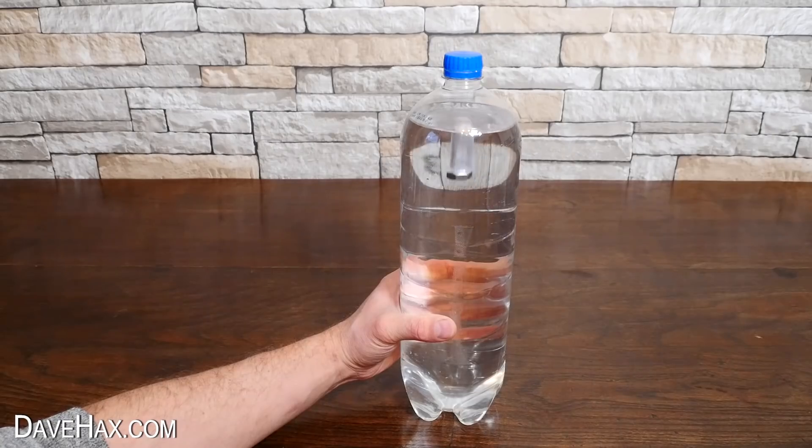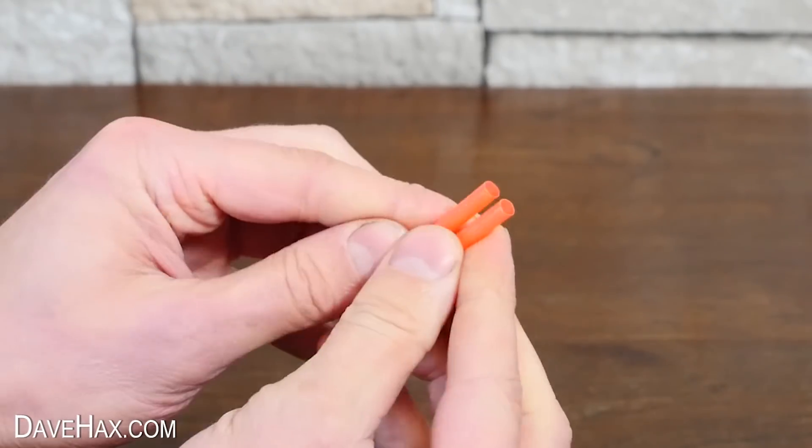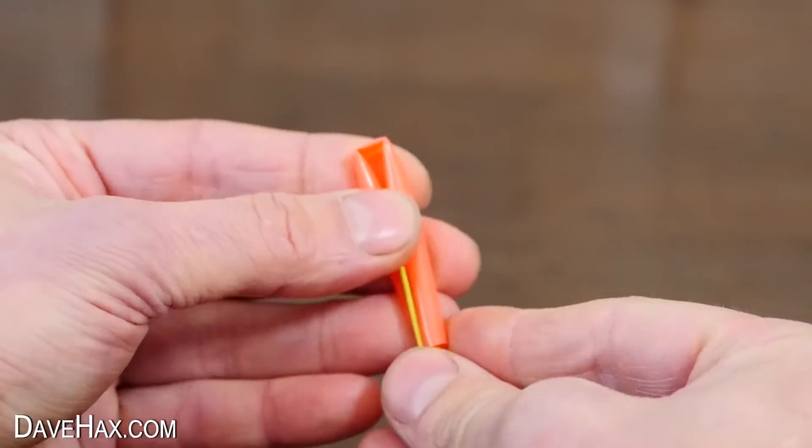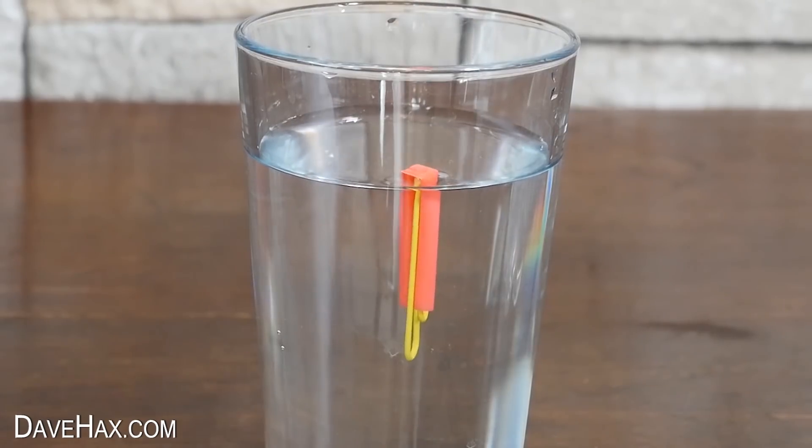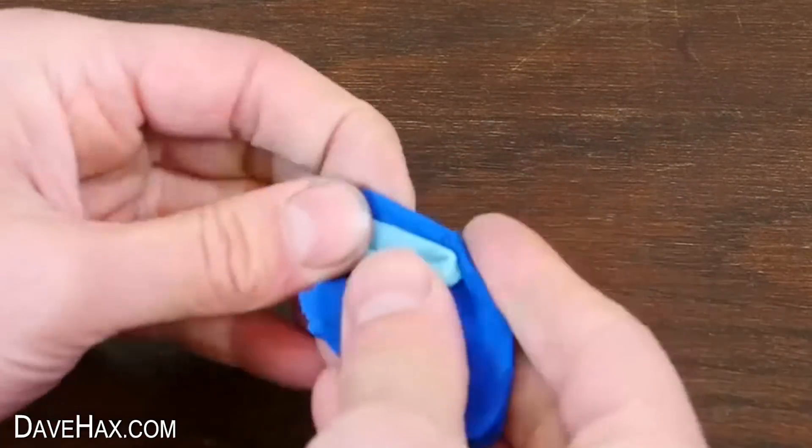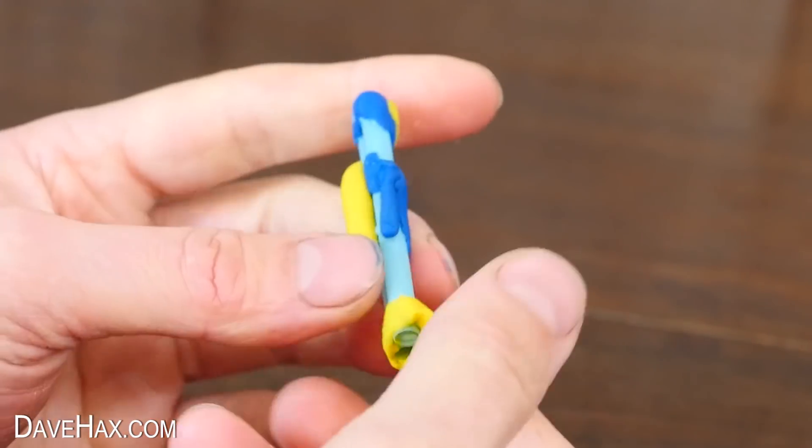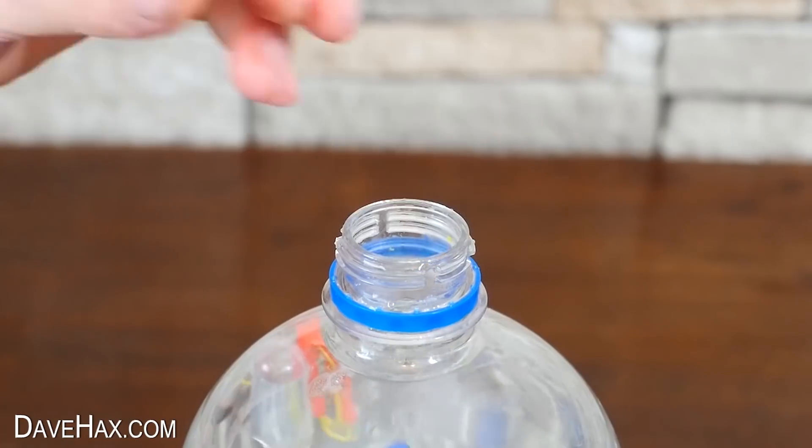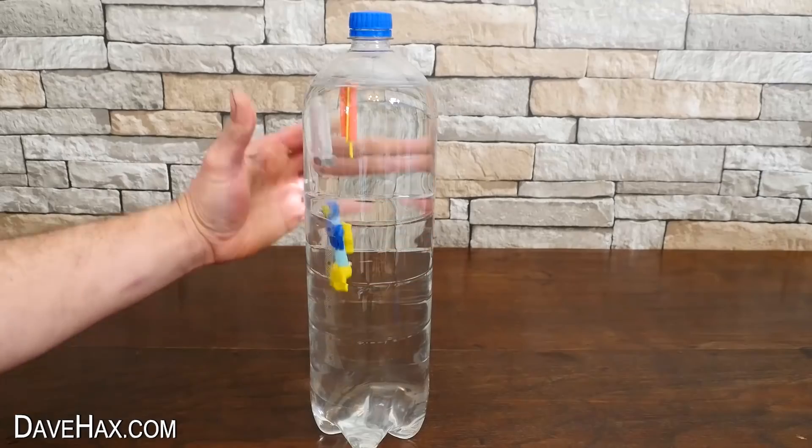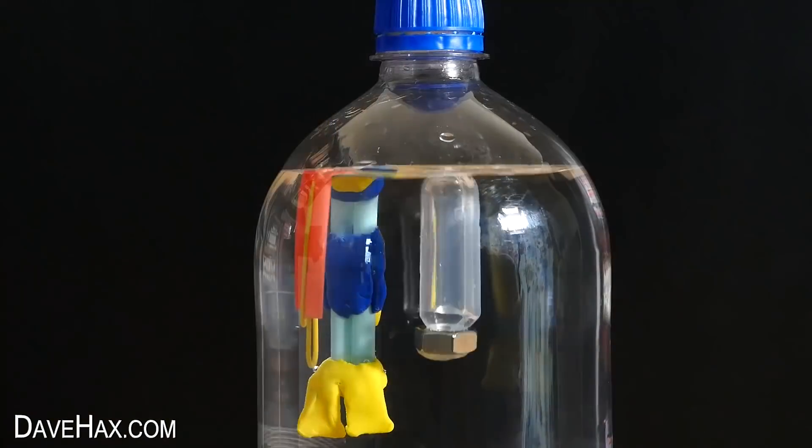And you can even make your own diver out of a drinking straw. Cut it in half, and fold it over on itself like this. And I'm using a paper clip for a weight. And make sure it floats. Then add it to the bottle, or if you wanted to, you could use some plasticine around a straw, to make your own diving figure. Then try it out by giving the bottle a squeeze. And because they're all made differently, they have different characteristics, so they all behave slightly differently.